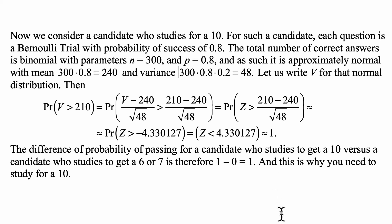And the difference of probability of passing for a candidate who studies to get a 10 versus a candidate who studies to get a 6 or 7 is therefore 1 - 0, so it's 1. And this is why you need to study for a 10, because you probably would like to pass this exam.